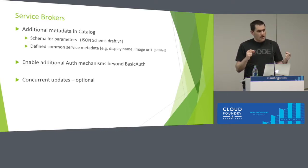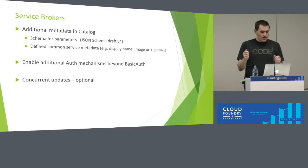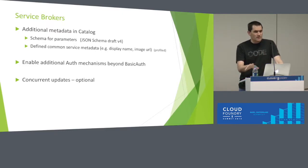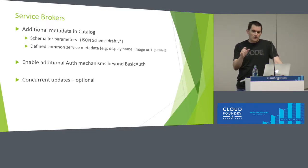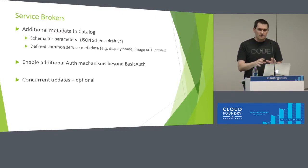We also codified common service metadata into the spec — things like display name and image URL. These are popular bits of metadata that aren't part of the core spec but are now defined in the profile.md document. Another key thing people wanted was alternatives to basic auth. The spec used to say you must use basic auth, but we loosened that — if the platform and broker agree on OAuth or something else out-of-band, that's fine. But if there's no out-of-band communication, basic auth remains the default baseline.